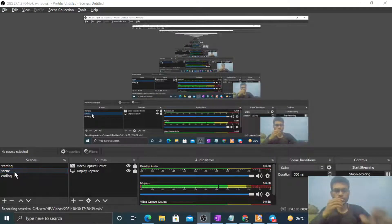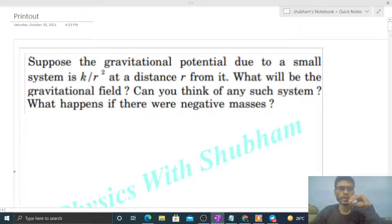Okay, hi everyone. Today let's discuss this interesting problem. Suppose the gravitational potential due to a small system is k/r² at a distance r from it. What will be the gravitational field? Can you think of any such system? What happens if there were negative masses?